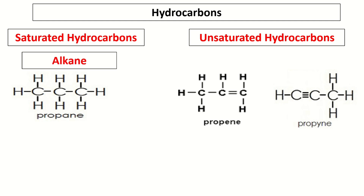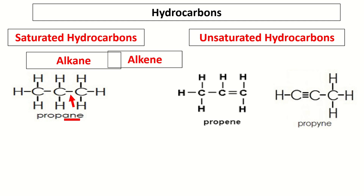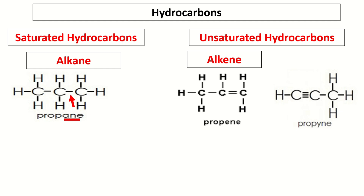Saturated hydrocarbons are also called alkanes. Alkanes have a single bond and end with A-N-E. For the unsaturated hydrocarbons, we have alkenes, which have a double bond and end with E-N-E. Another example of unsaturated hydrocarbons is alkyne, which has a triple bond and ends with Y-N-E.